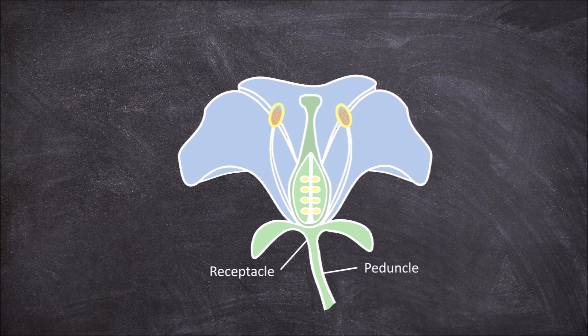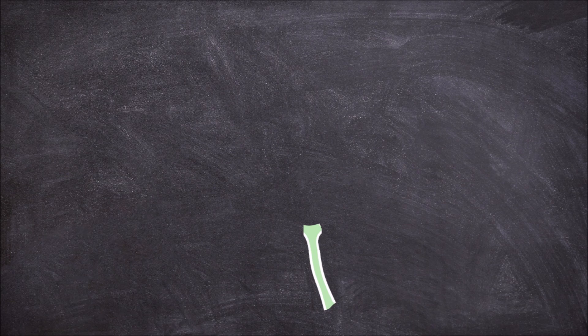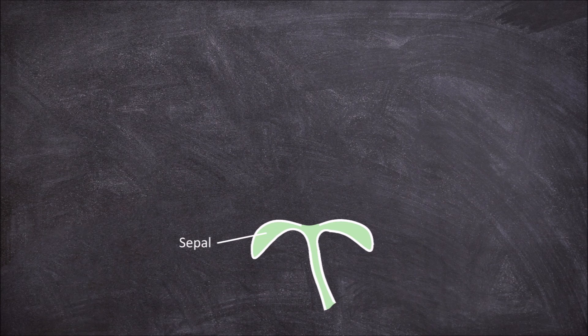These organs develop in rings that flank the meristem in what are called whorls. The first whorl to develop from the floral meristem is the sepal whorl, which goes on to become the outermost whorl of the complete flower.